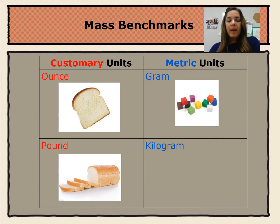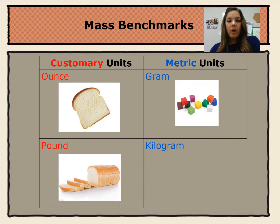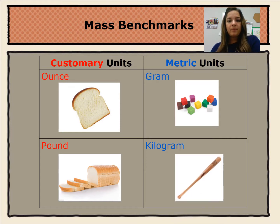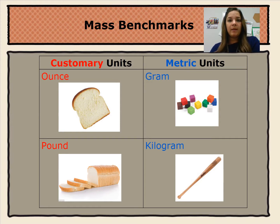For a gram, we can think of a unit cube. Like the base ten blocks, one unit cube is about one gram. For kilograms, we can think of a baseball bat. A baseball bat is equal to about one kilogram.